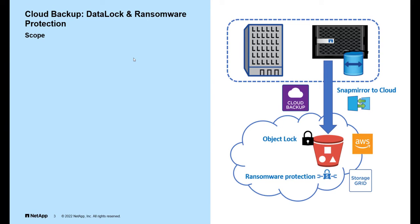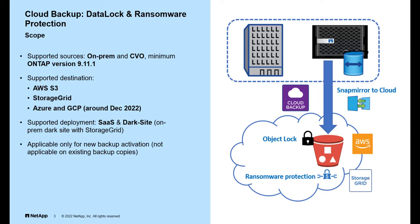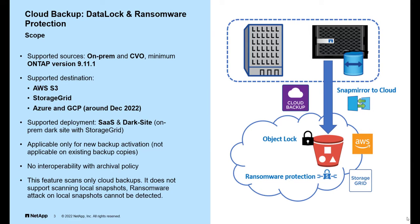Data lock and ransomware protection is supported on on-prem ONTAP clusters and Cloud Volumes ONTAP on versions 9.11.1 and above. It currently supports AWS S3 object store, and StorageGRID will be supported in September 2022. Azure and GCP object store will be supported by December 2022. It is currently available on Cloud Manager SaaS and Cloud Manager dark site deployment. Please note this feature is applicable only for new activations, there is no interoperability with archival policy, and this feature scans only cloud backups — it does not support scanning local snapshots for ransomware attack.